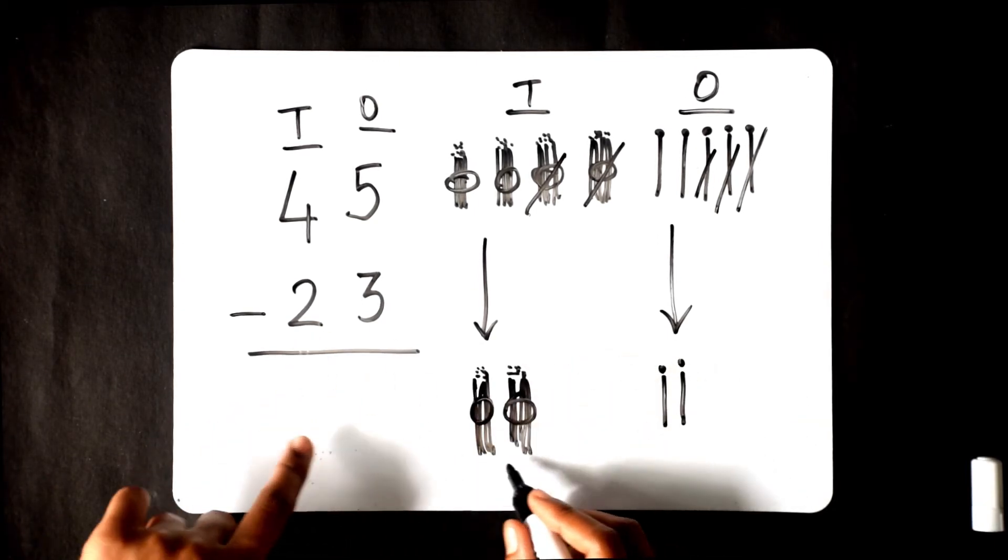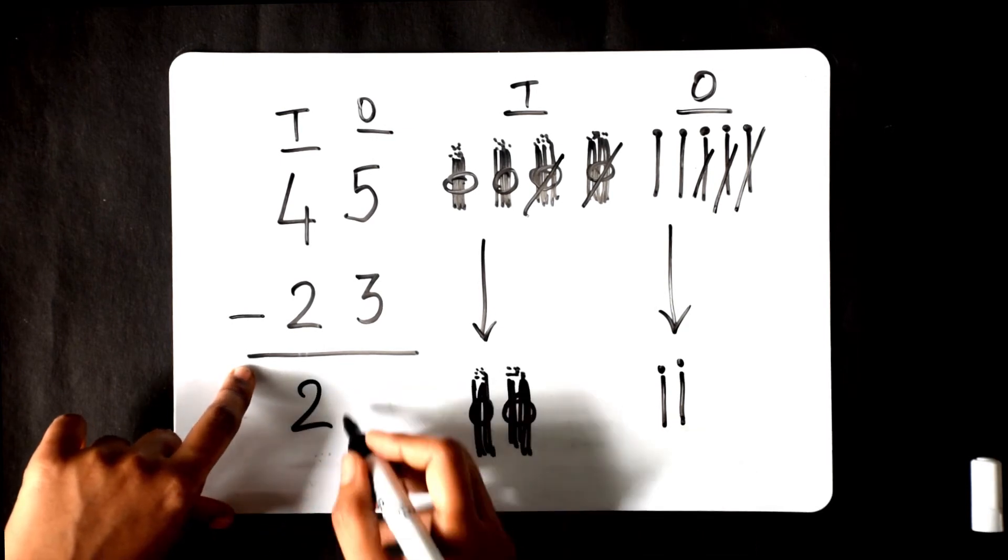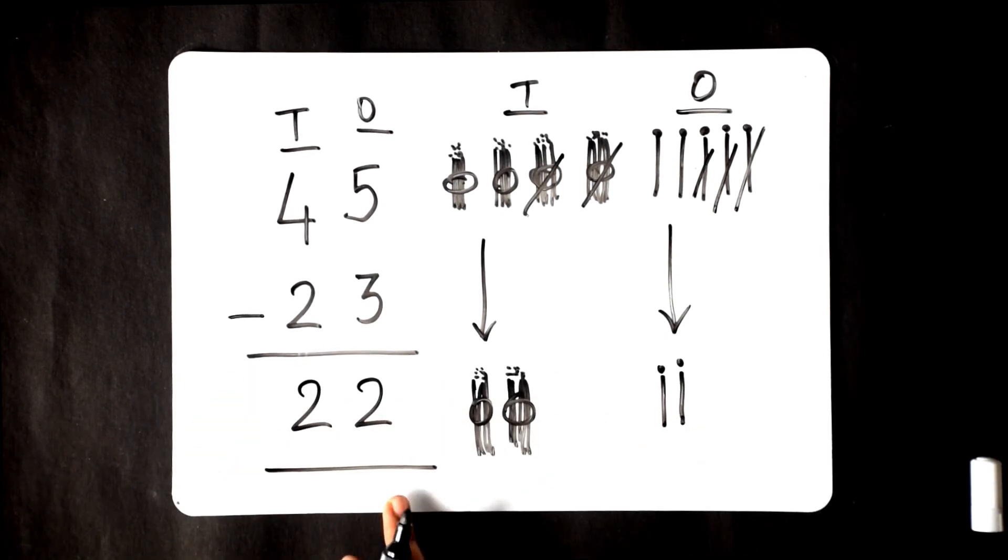We have 2 tens and 2 ones remaining, that is 22 rupees. Thank you for watching this Katadi video and do try this for yourself.